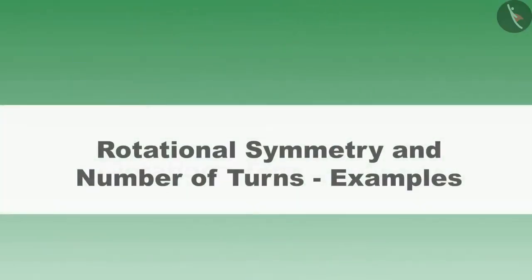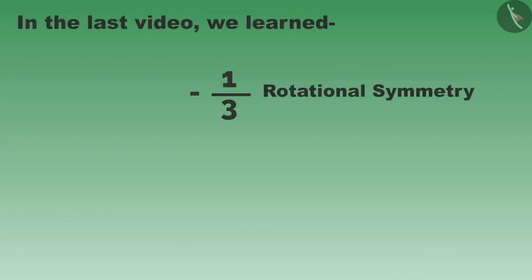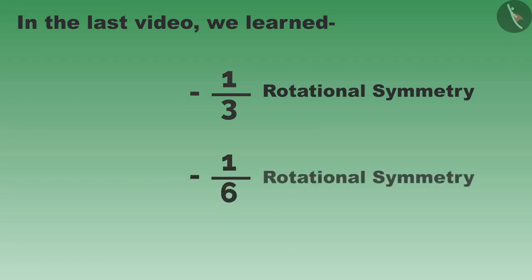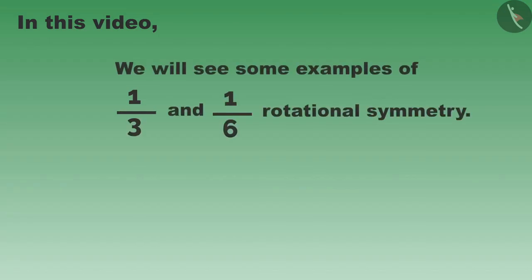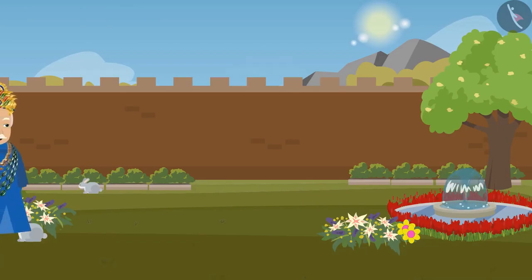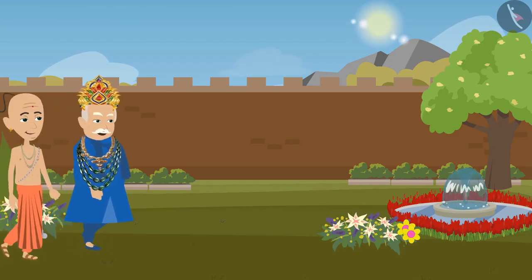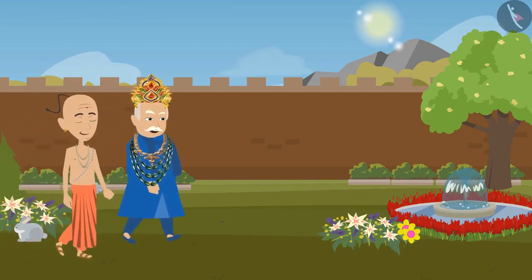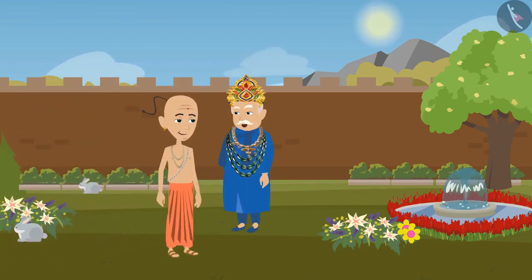Friends, welcome to this video. In the last video we learned about one-third and one-sixth rotational symmetry. Today we will see some examples related to them. King Krishnadeva Rai and Tenali Rama were taking a walk in the garden.